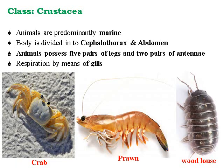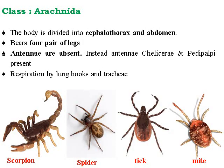Class Crustacea — examples are crab, prawn, and woodlouse. These animals are predominantly marine, living in water. The body is divided into a cephalothorax and abdomen. The animal possesses five pairs of legs and two pairs of antennae. Respiration is by means of gills. In contrast, in the case of insects, respiration is through the trachea.